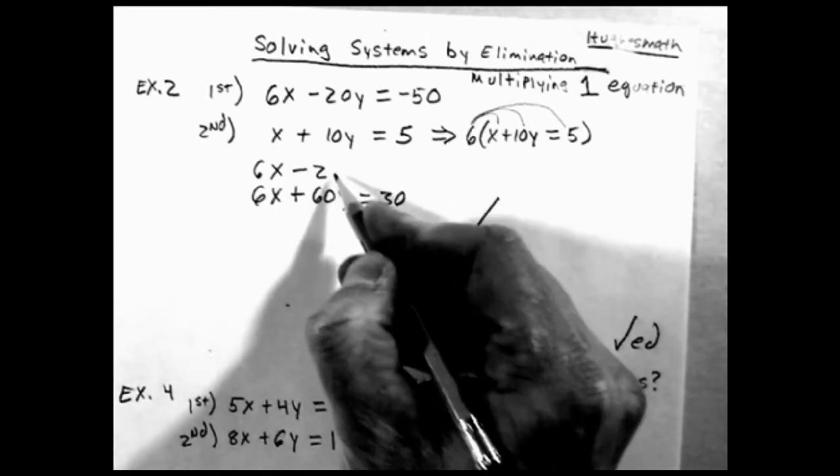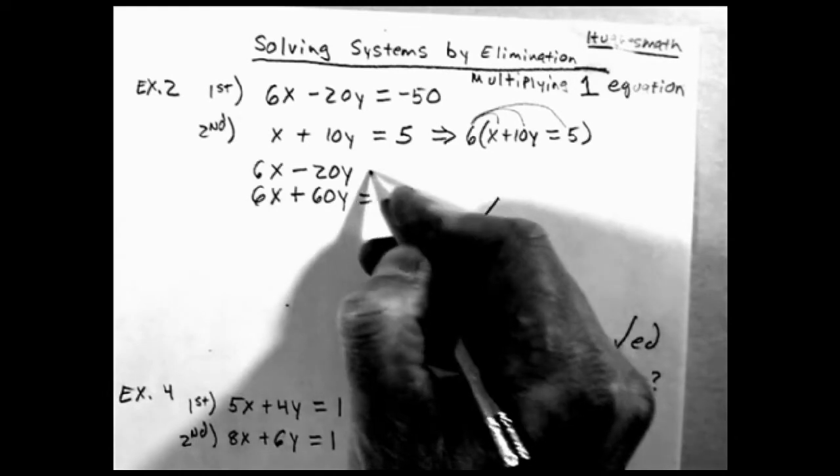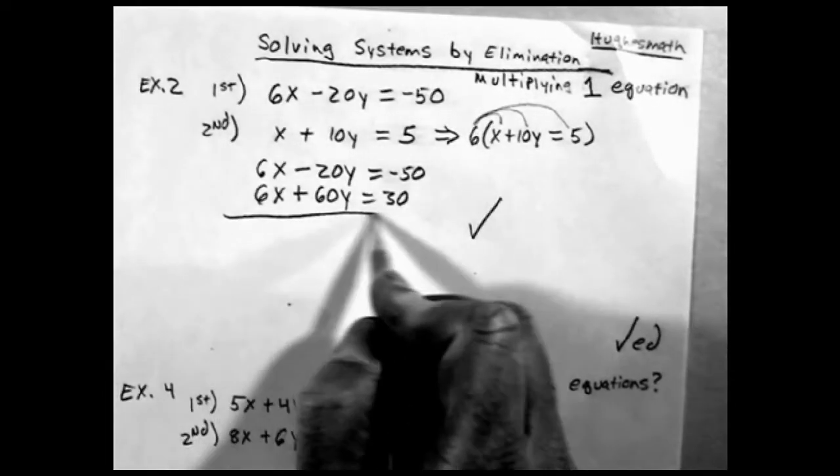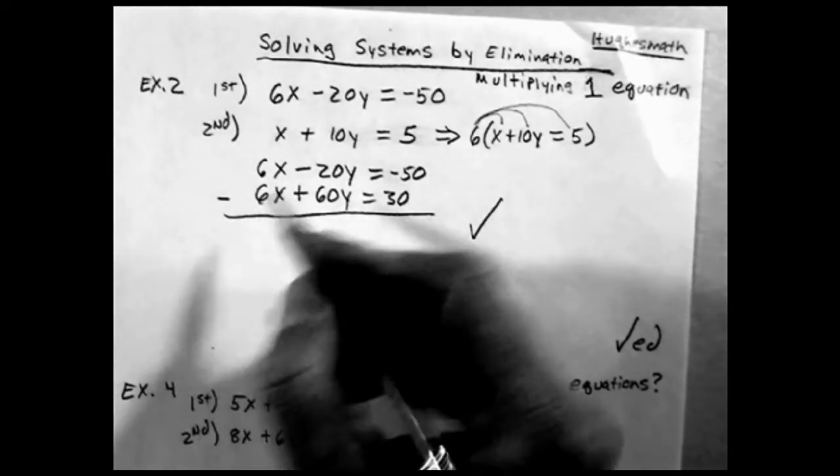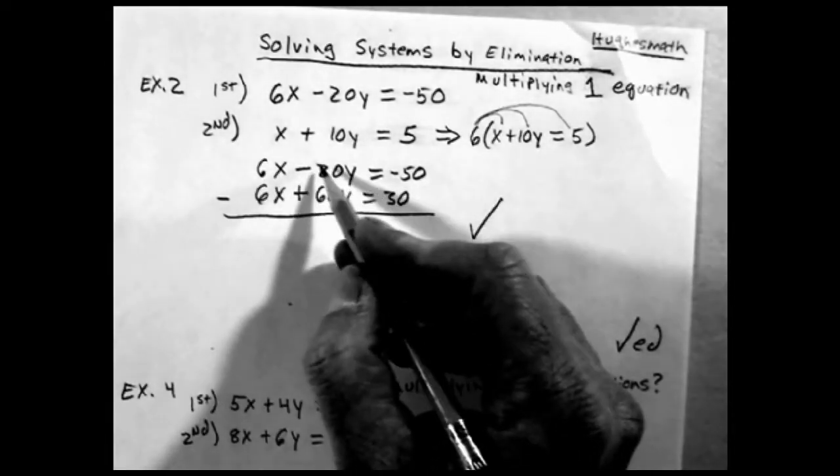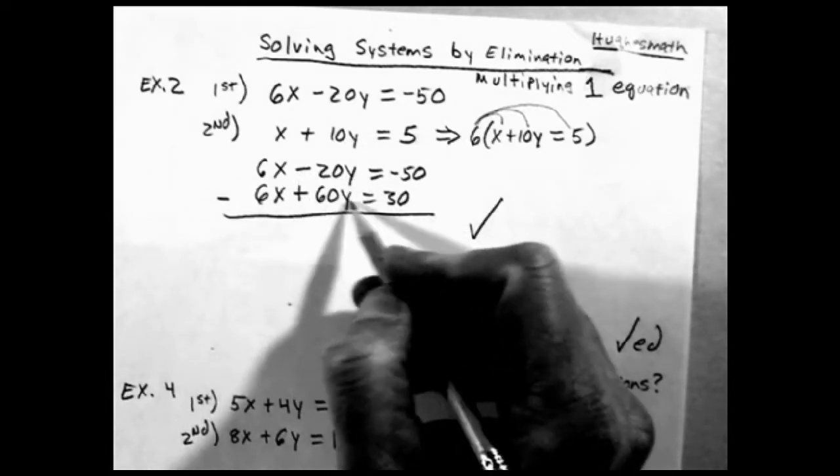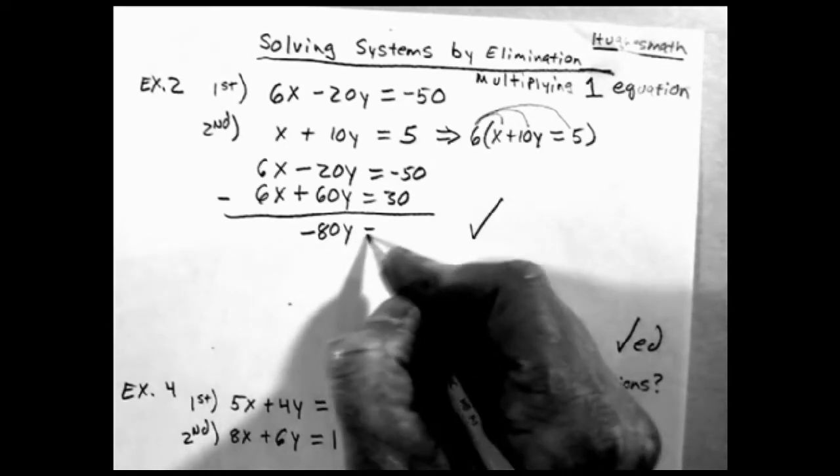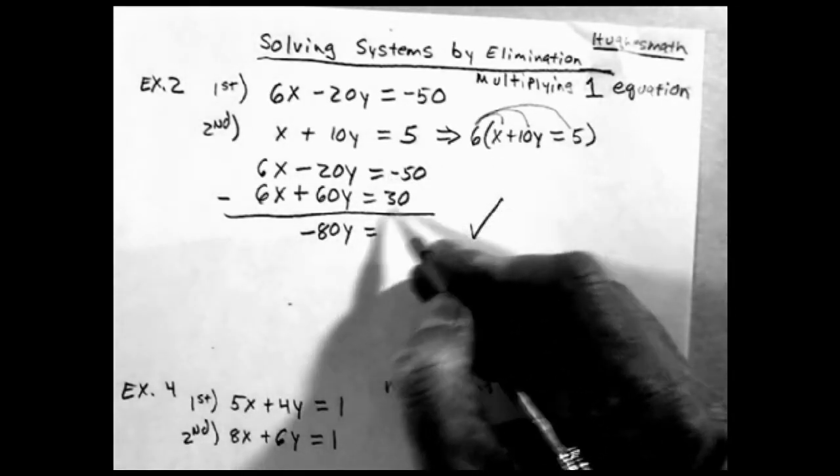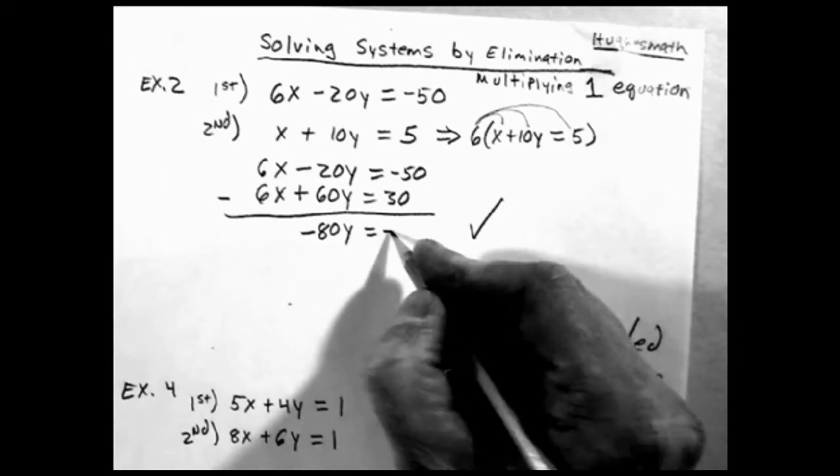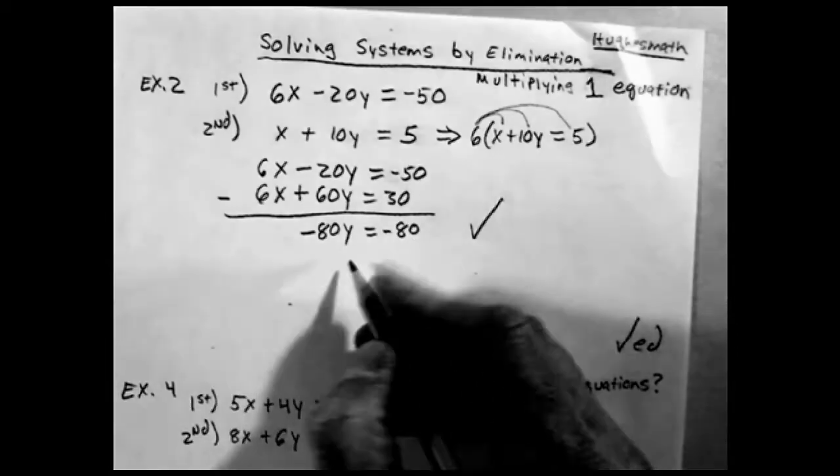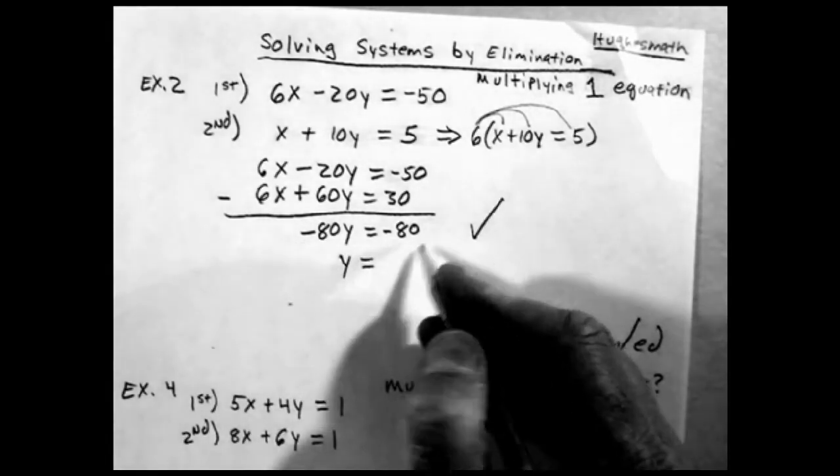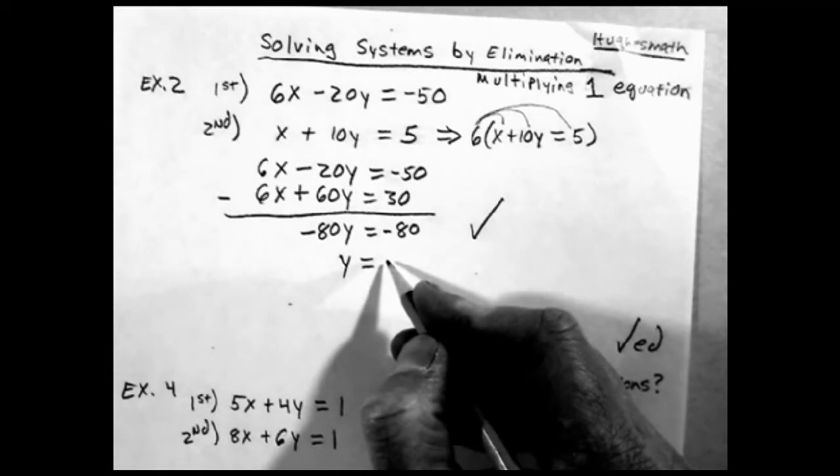Next, I'm going to copy the first equation back down on top of it. Looks like I should have put it below it because I see the minus here. I'm going to subtract both of these, so this goes away. Minus 20 minus 60 is minus 80y. Minus 50 minus 30 is minus 80.